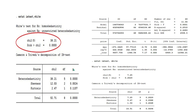Here the p-value of the heteroscedasticity test is 0.00, which means we reject the null hypothesis and conclude there is a heteroscedasticity problem. On the other hand, if we find the p-value is 0.20, that means it is greater than 0.05, so we cannot reject the null hypothesis and there is no heteroscedasticity problem.